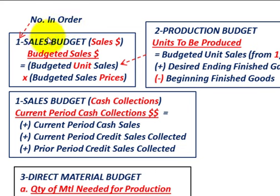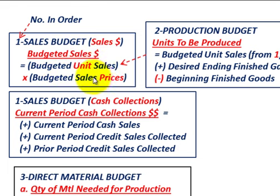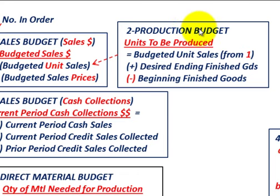Starting with the sales budget: budgeted sales dollars equal budgeted units of sales times the budgeted sales price, done for each product. For cash collections in the sales budget, current period cash collections equal the current period cash sales, plus current period credit sales collected, plus any prior period credit sales collected.